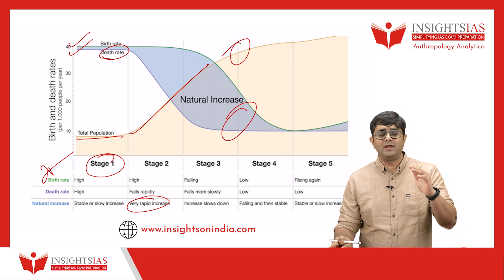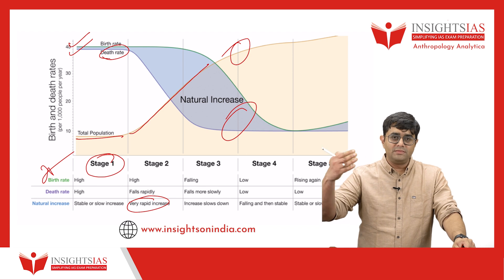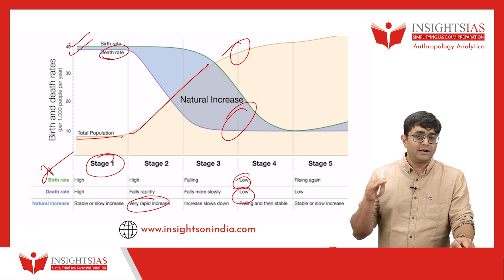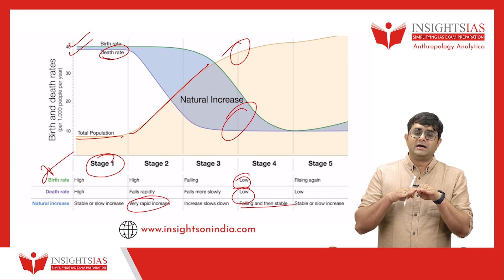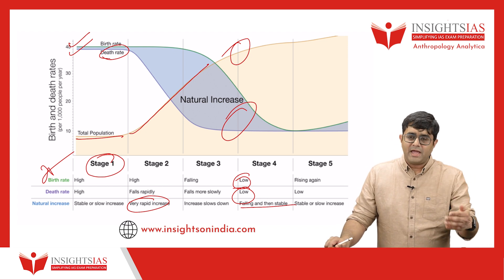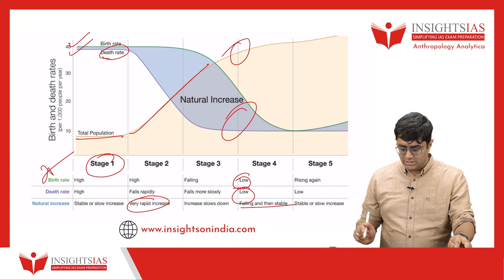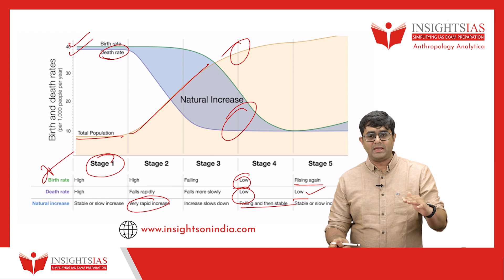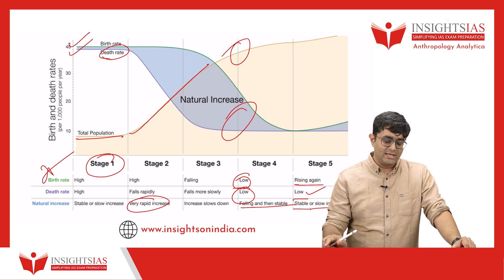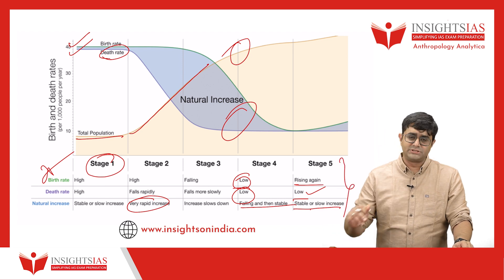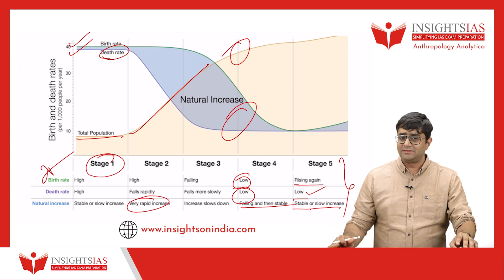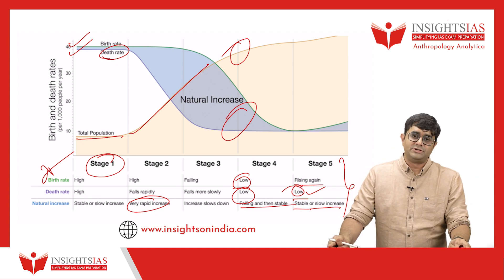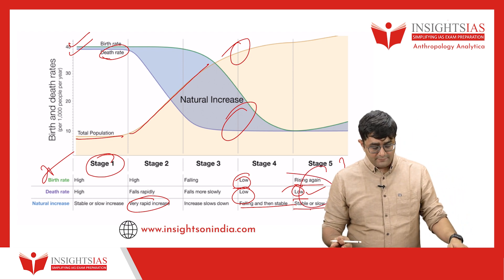India is somewhere at the end of the third stage, where in some years the population is going to stabilize. In the fourth stage, both birth rate and death rate are low, and the population stabilizes. Some anthropologists have proposed a fifth stage where there could be a slight rise in birth rate while death rate remains low, causing a gradual population increase. Another proposal suggests birth rate remains low and death rate further declines, leading to a reduction in the population.